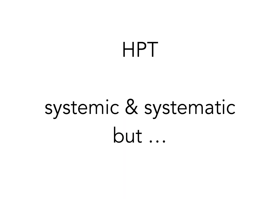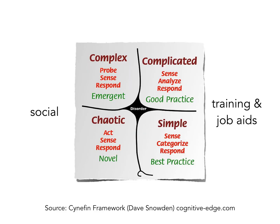But HPT does not provide much insight into complex systems. Training and performance support are effective to support any work that can be categorized and analyzed so that good or best practices can be developed. However, simple work keeps getting automated, and even complicated work is being replaced by software whenever a process can be reduced to a flowchart. In order to develop emergent and novel practices, people need to collaborate and cooperate as they work on understanding the changing environment and technologies. This is social learning, and it is a necessity when working in complex or chaotic environments.